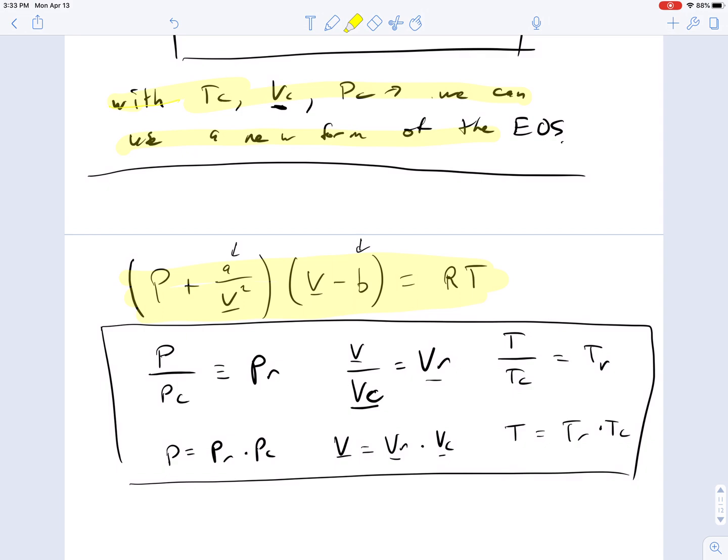We're defining new variables called the reduced pressure, which is a ratio of the actual pressure relative to its critical pressure. The reduced volume, which is the ratio of its actual volume to the critical volume, and then the reduced temperature TR, which is the temperature relative to the critical temperature.